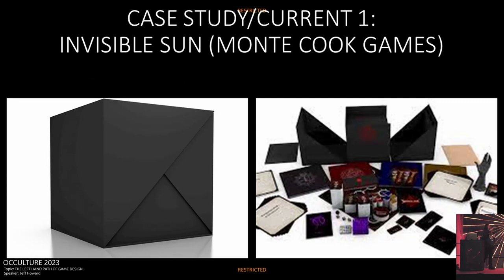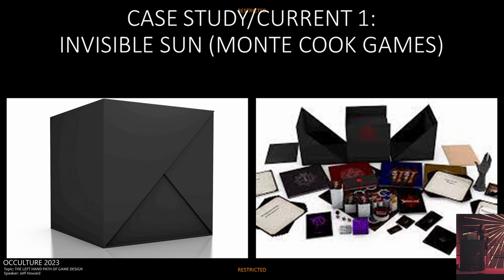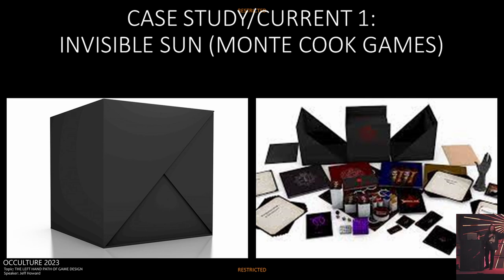Case study number one: Invisible Sun. When you backed it on Kickstarter, there was really only one reward tier costing around 350 British pounds, called 'Summon the Black Cube.' You would back it at this level not knowing what you'd get, and a year and a half later, this gigantic black cube would arrive on your doorstep. You'd take it out and it would unfold like the Lament Configuration from Hellraiser — with weird little drawers, hidden compartments, strange tchotchkes, a circular tarot deck, and a resin sculpture of a six-fingered left hand, which is at the center of the game.